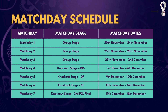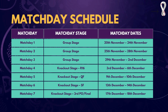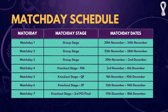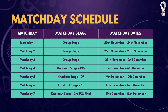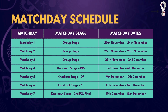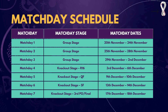The match day schedule is spread over different days. Match day 1, the first group stage game, is the longest — spread over 5 days. Match day 2 runs from 25th to 28th November, match day 3 from 29th November to 2nd December. Match day 4 (round of 16) is 3rd to 6th December. Quarterfinals (match day 5) are 9th to 10th December, semifinals are 13th and 14th December, and the final plus 3rd place game is 17th to 18th December. Make sure to note these dates.